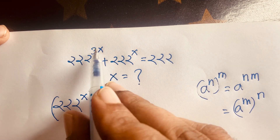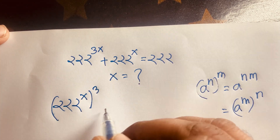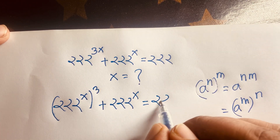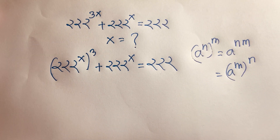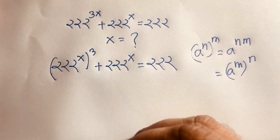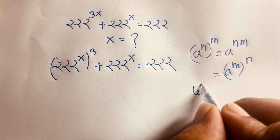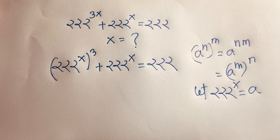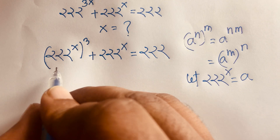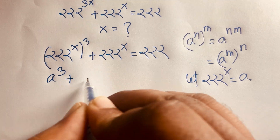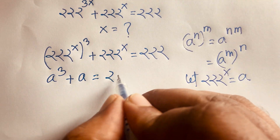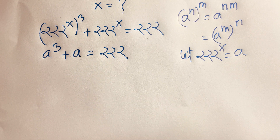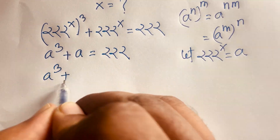So 3 times x gives us the exponent. Now let 222 to the power x equal a. Then the equation becomes a cubed plus a equals 222.